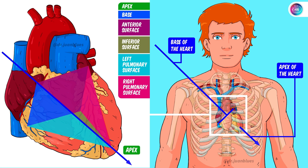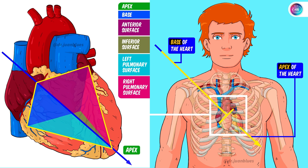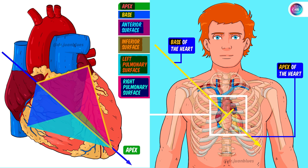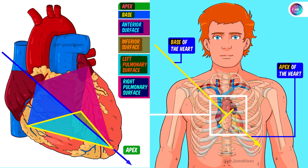The heart is classically described as a pyramid in which the tip, called the apex, is pointed forwards, left and downwards, whilst the base of the pyramid is pointed backwards, right and upwards. Regarding the different surfaces of the heart, it is important to mention that different sources cite the heart as having three, four or six surfaces depending on the author. In this case, we will describe the heart as having four surfaces, since it greatly facilitates general understanding of the subject. The heart will have an apex, a base, and four surfaces: an anterior surface, an inferior surface, a right pulmonary surface, and a left pulmonary surface.